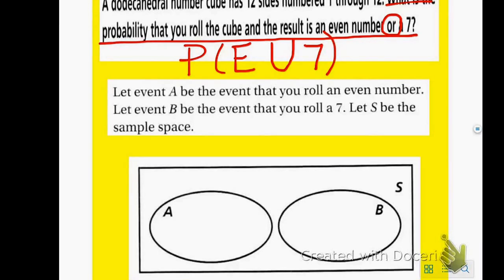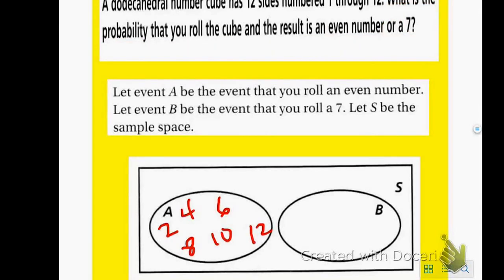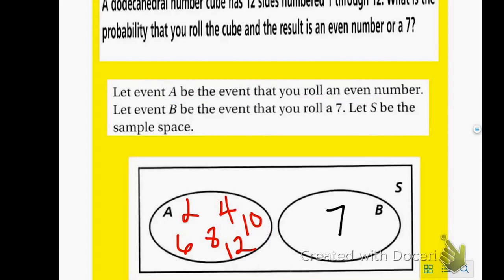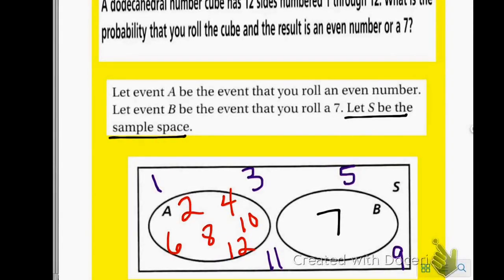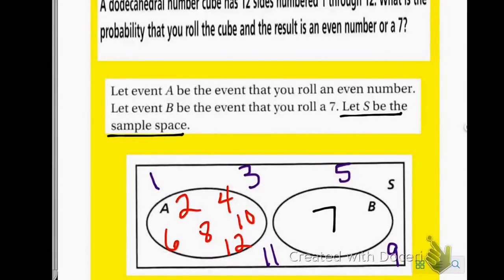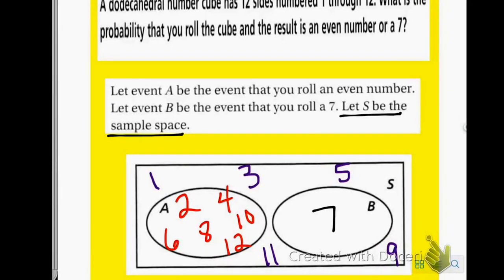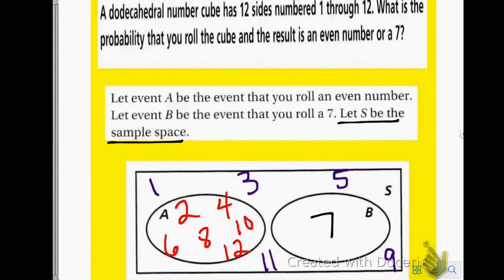Let's draw a diagram to help us see it visually. If we let event A be that we roll an even number, we put the even numbers in circle A. And if we let event B be that we roll a 7, we put 7 in circle B. Now we need to find our sample space — that's anything not in circle A or circle B, which would be 1, 3, 5, 9, and 11.